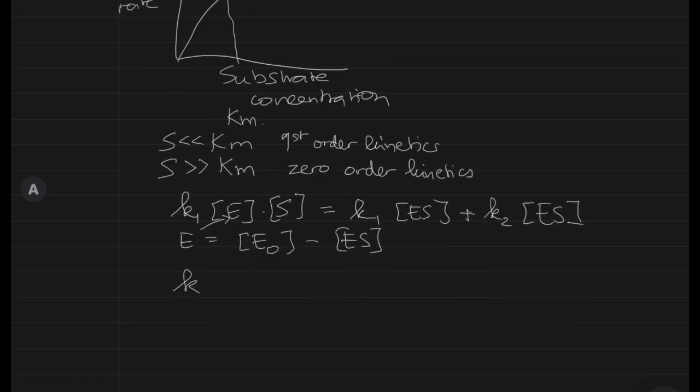Now we need to apply that we know that the enzyme concentration and the reaction will always remain the same. So I'm going to substitute E in this equation for E0, so that's the total amount of enzyme minus the enzyme substrate complex. And this is what you end up with.